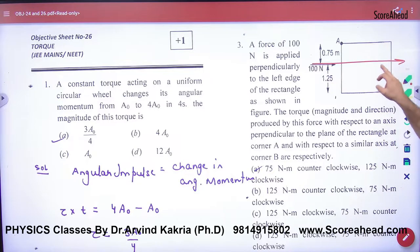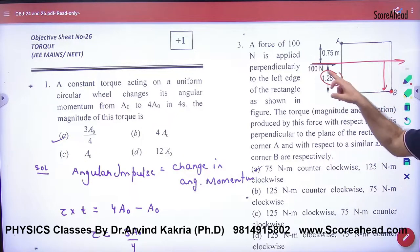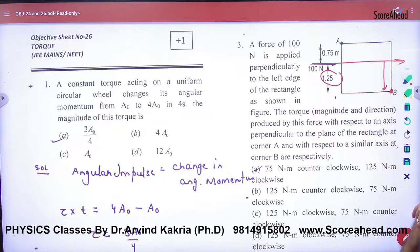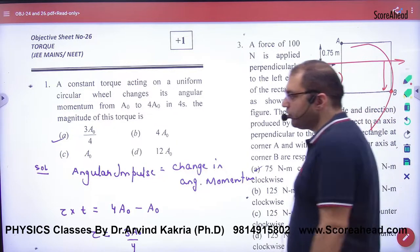then what will the torque be? Force into perpendicular distance. One point, 25. But how will this be? Clockwise. So for that, two torques will come.